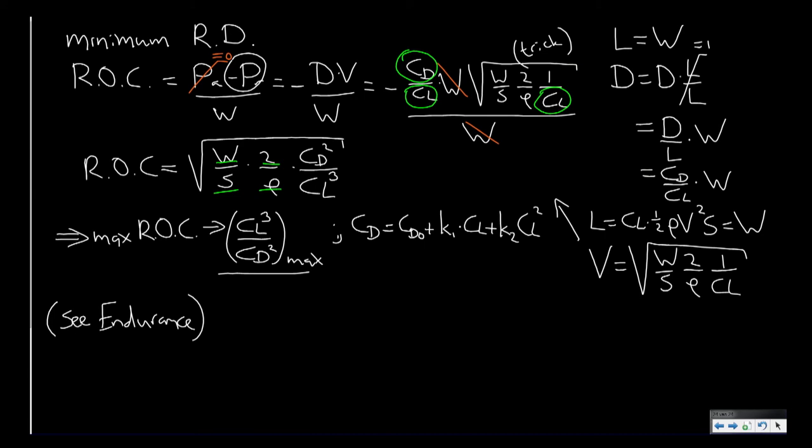So the optimum CL which we have to fly at to achieve minimum rate of descent is equal to minus K1 plus the square root of K1 squared plus 12 K2 CD0, and that whole term divided by 2 times K2.